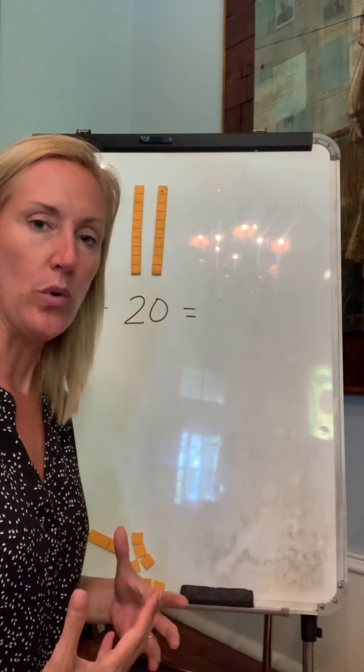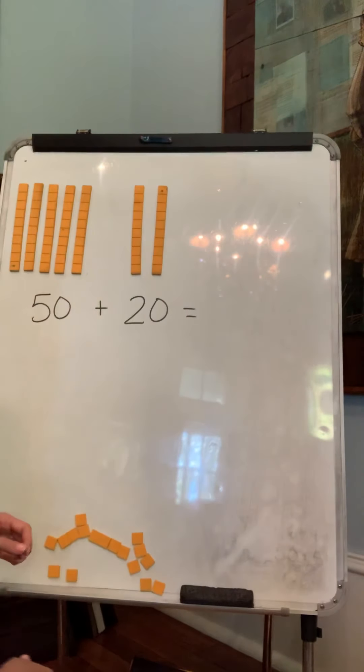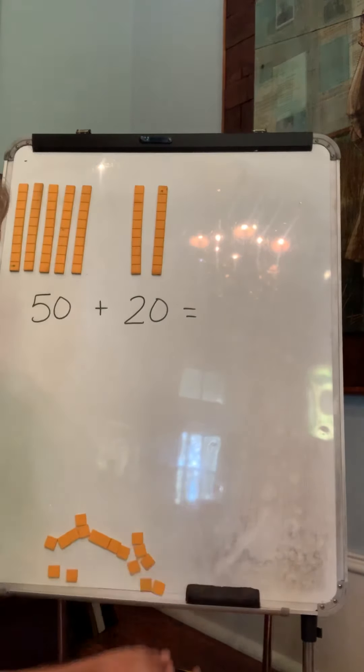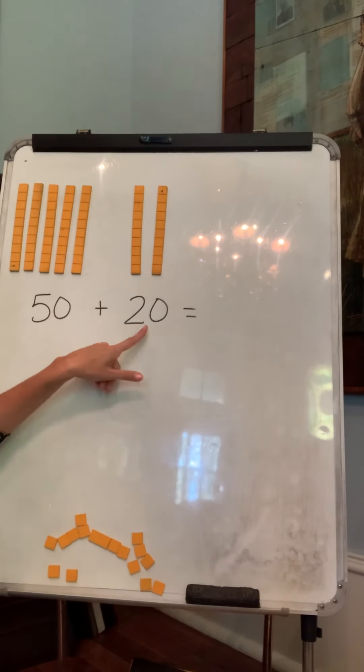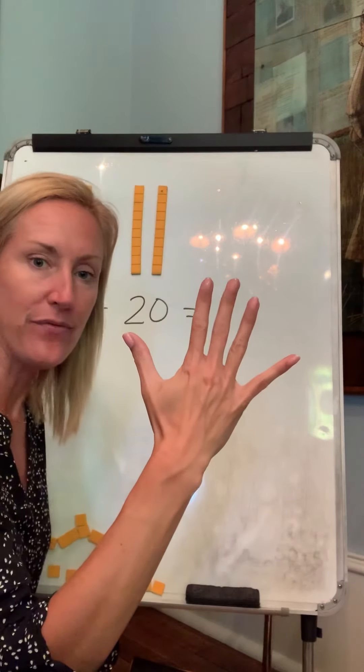Let's do a little bit of review about adding tens together. So if I have this equation, if I have 50 plus 20, well, if I have 50, that means I have five tens.